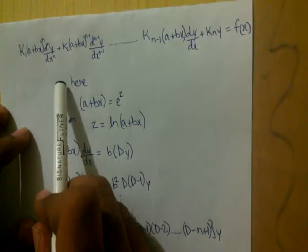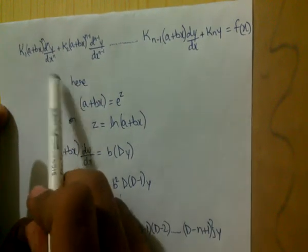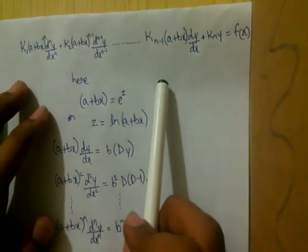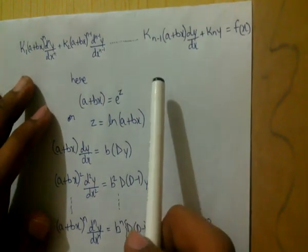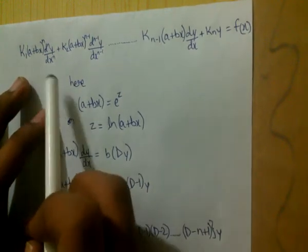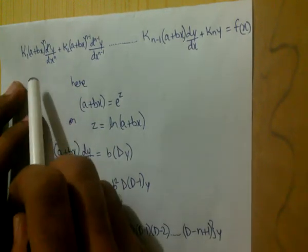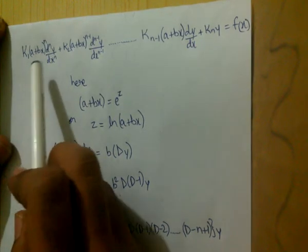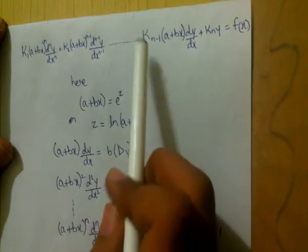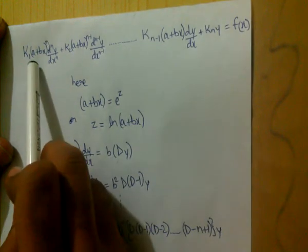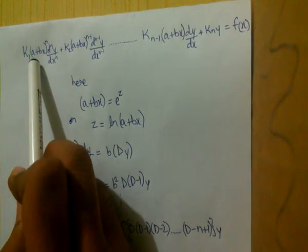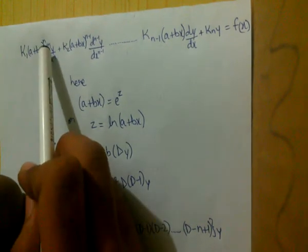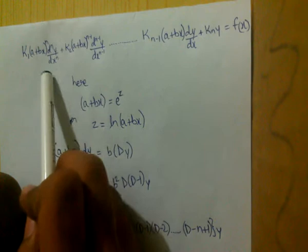Our topic of concern is Legendre's linear differential equation. Let's look at the general form: it has constants k1, k2 up to k(n-1), and a variable term (a + bx) raised to the power n, multiplied by the nth derivative of y with respect to x.